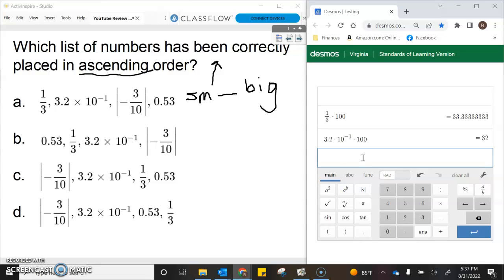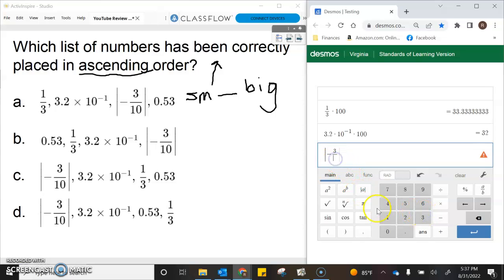We've got an absolute value, so we've got the absolute value of negative 3 divided by 10, and we're going to multiply that—let me make sure I have that right—and we're going to multiply that by 100.